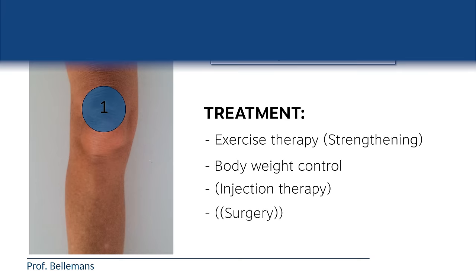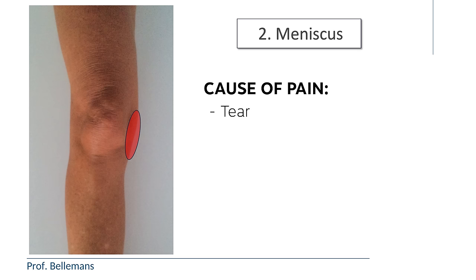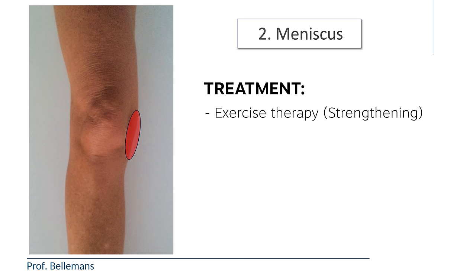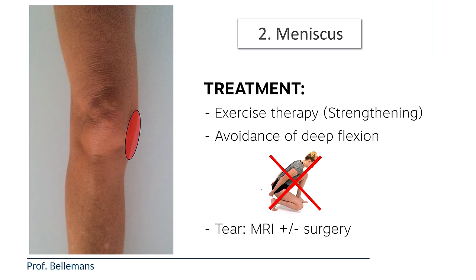2. Meniscus. You have a medial and a lateral meniscus. Either one can be a source of pain, usually because of a tear, a crush, or wear and tear. The treatment consists of exercise therapy to strengthen the knee, together with temporary avoidance of deep flexion activities so that the meniscus can heal. If there is an unstable tear, you may need an MRI and possibly surgery to fix it.